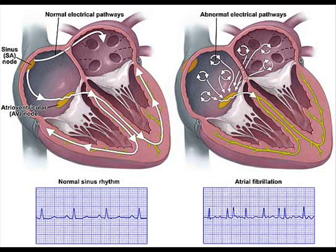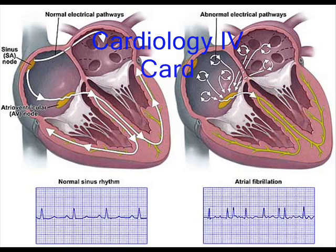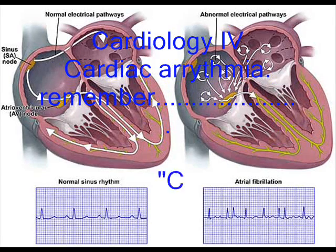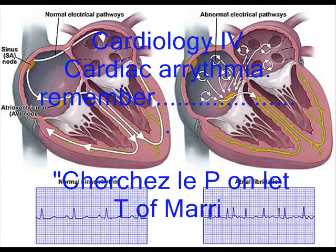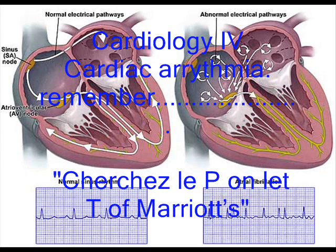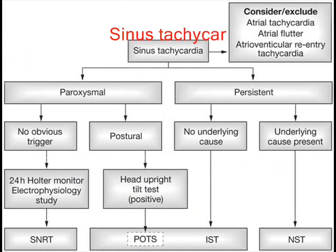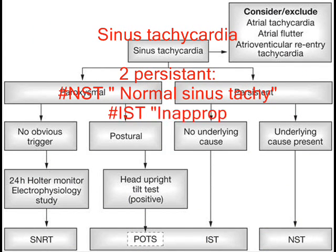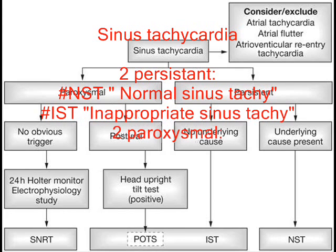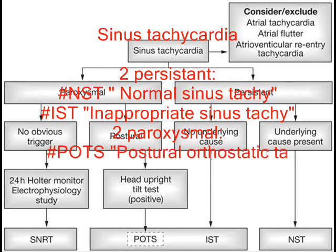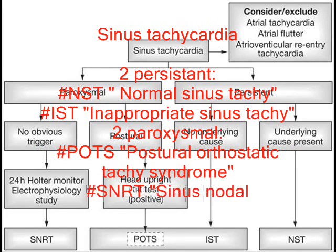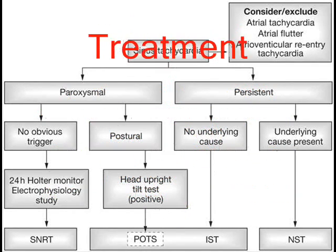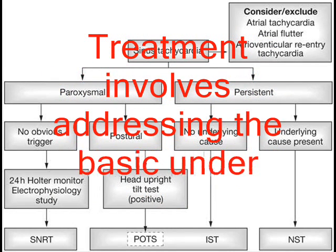Hi everyone, this is Dr. Barakat Thabit. I'm going to do the cardiology review for cardiac arrhythmia. We're going to start first with sinus tachycardia. We have two persistent forms: NSD and ISD, and two paroxysmal forms: POTS and SNRAT. Treatment of sinus tachycardia will of course involve addressing the underlying stressor.